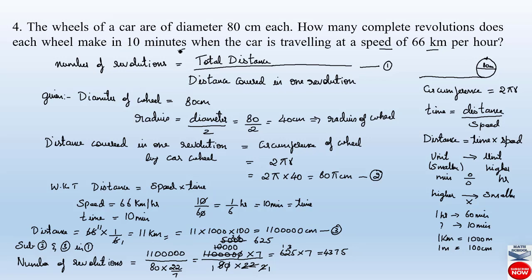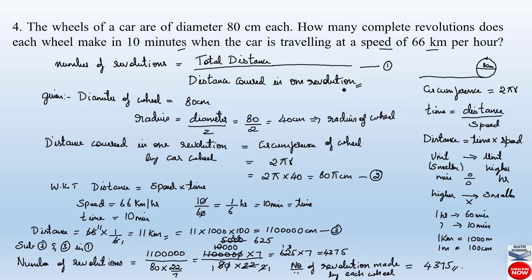Therefore, 4375 complete revolutions are made by each wheel in 10 minutes when the car is traveling at a speed of 66 kilometers per hour. To summarize: remember the number of revolutions formula, recall that distance covered in one revolution equals the circumference of the wheel, calculate total distance, and substitute values into the formula.